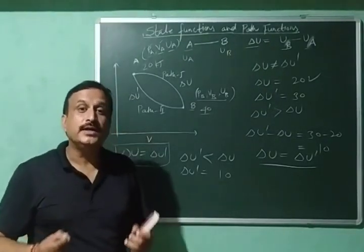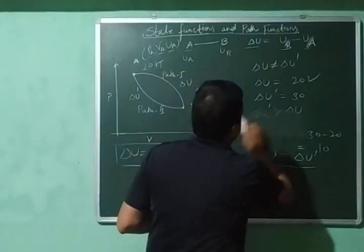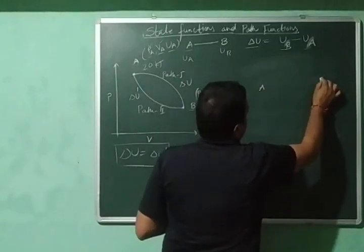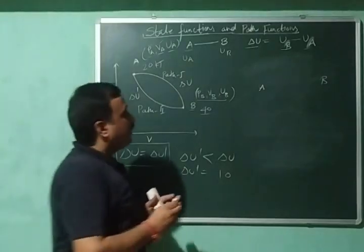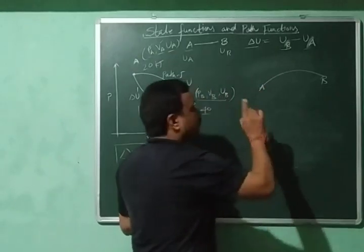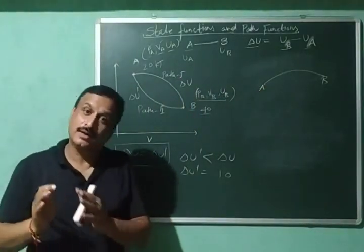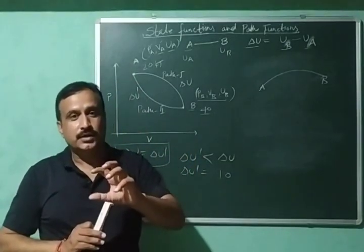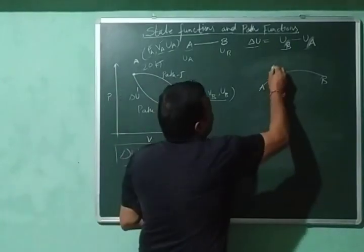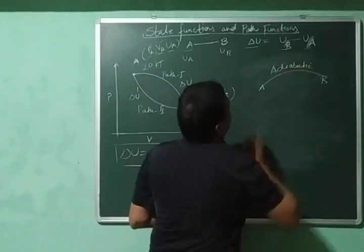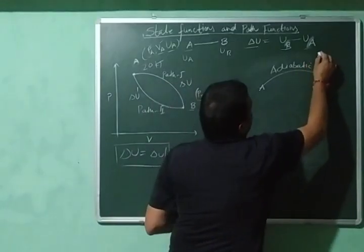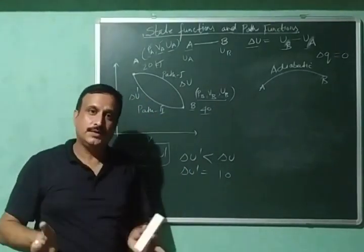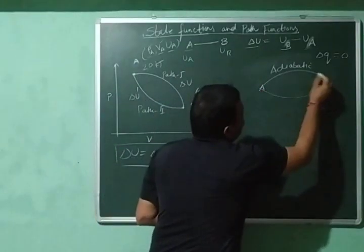Now let us discuss how heat is a path function. Consider the same process where I am converting A into B. I have two options: I can convert A into B under adiabatic conditions — carrying out the process so that there is no heat exchange, neither absorbed nor evolved. In this case, delta Q will be equal to zero.